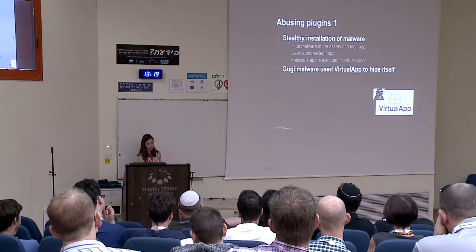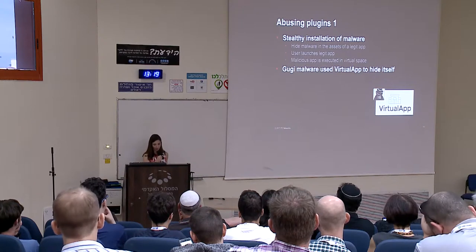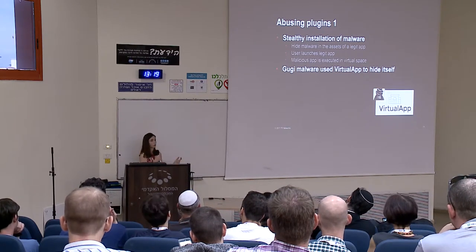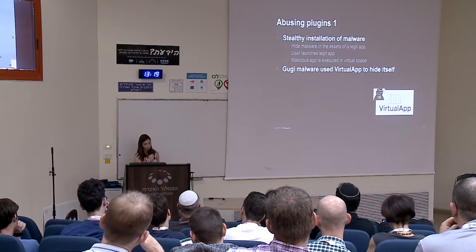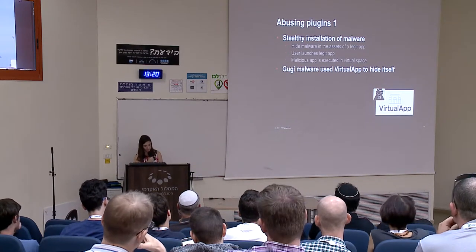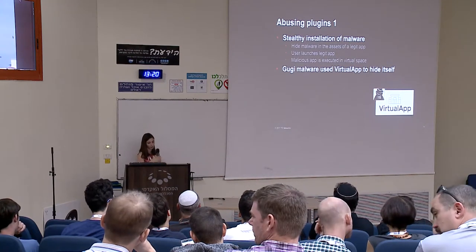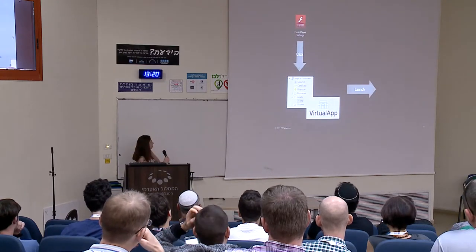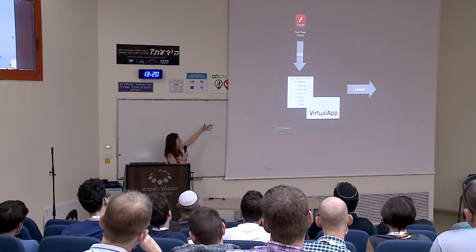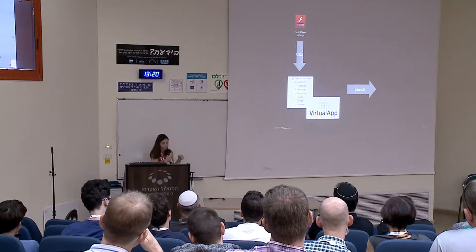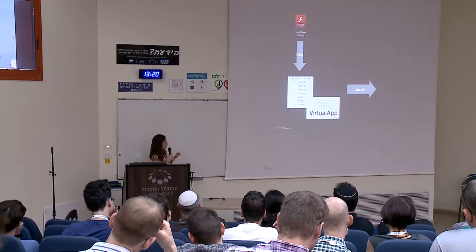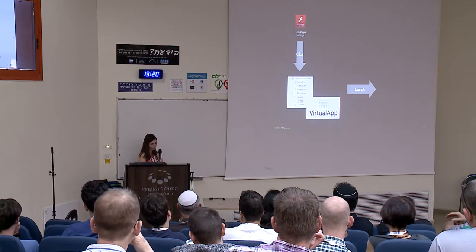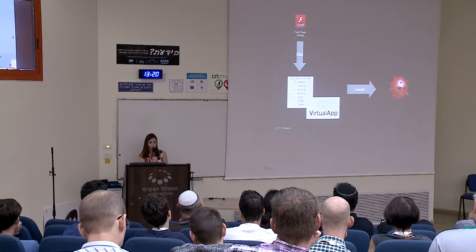One way to abuse plugin technology is to piggyback a legitimate-looking app. The user installs an app that passes all static security inspections. Inside the app's assets there's an encrypted malicious payload that gets decrypted and executed in the virtual space once the app is launched. In April, Android Malware Blog reported Guji financial malware using this functionality to avoid detection. For example, the user sees an 'Adobe Flash' icon, presses it, and the hidden APK is decrypted, installed, and launched via the plugin framework.